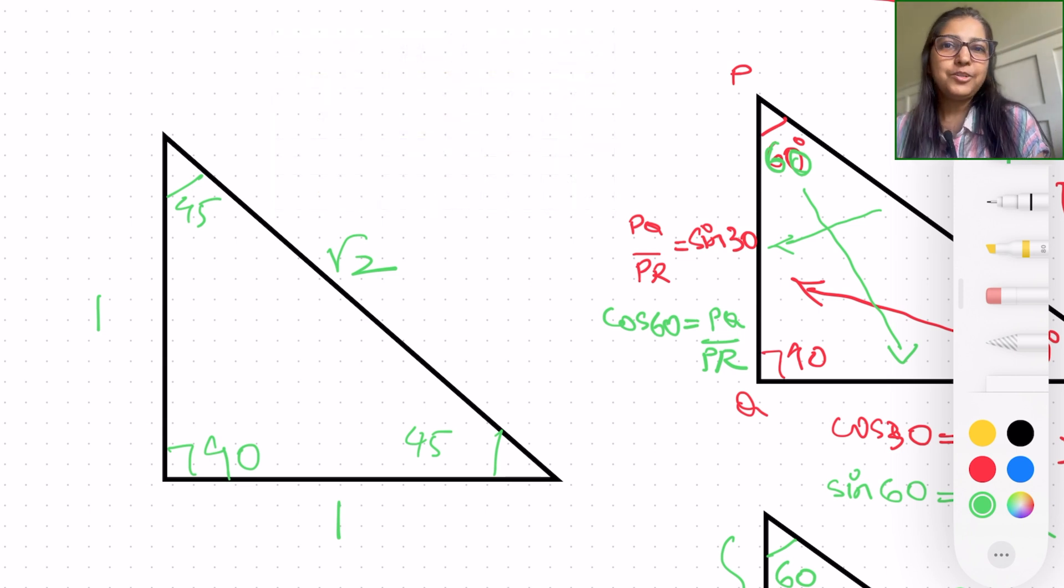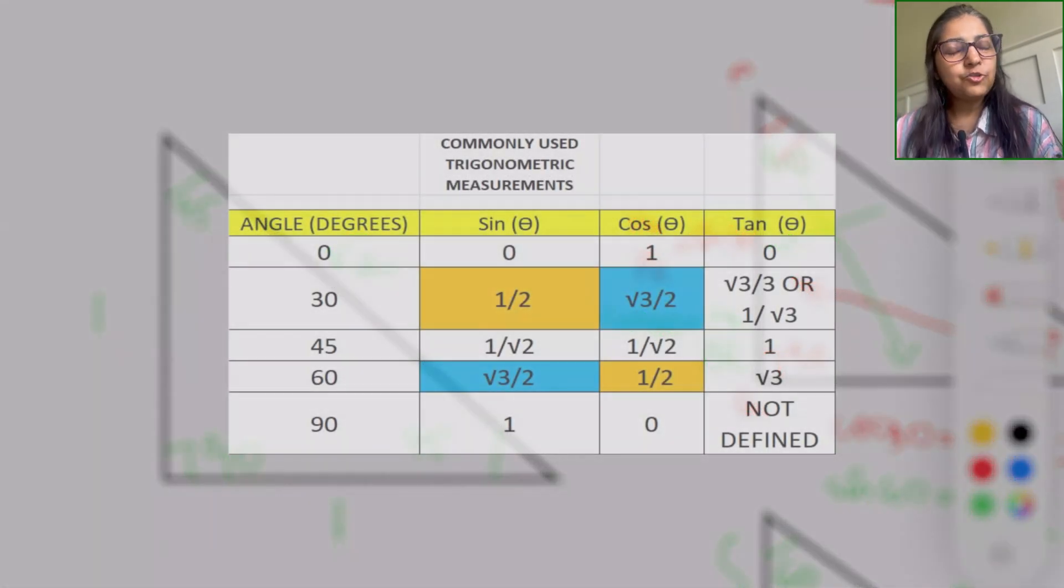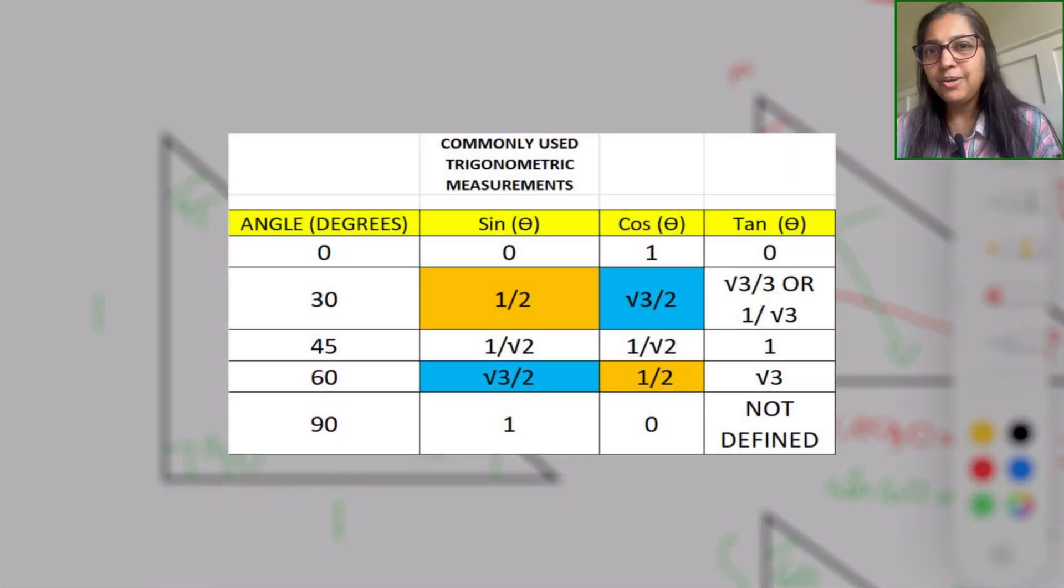So that is it about the video. We learned about the abbreviation of SOHCAHTOA. We learned about how the special right triangles can be utilized to understand the trigonometric ratios. And also, here is a table link or the chart for you, and you can play around with it and match your answers for sine 45, cosine 45, and so on and so forth.